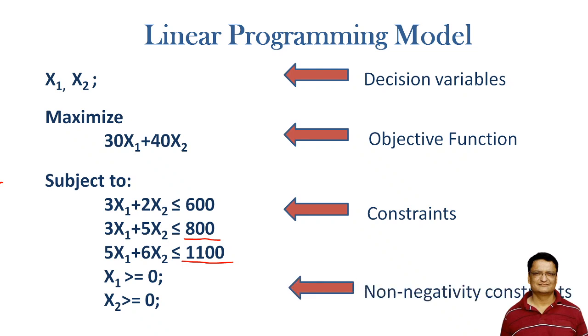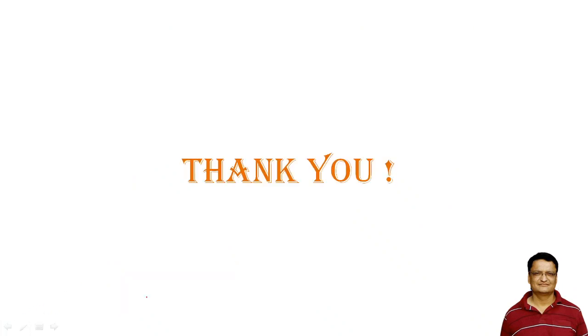What is the non-negativity constraint? Since the quantity of products P1 and P2 cannot have a negative value, x1 and x2 should each be greater than or equal to zero. Thank you.